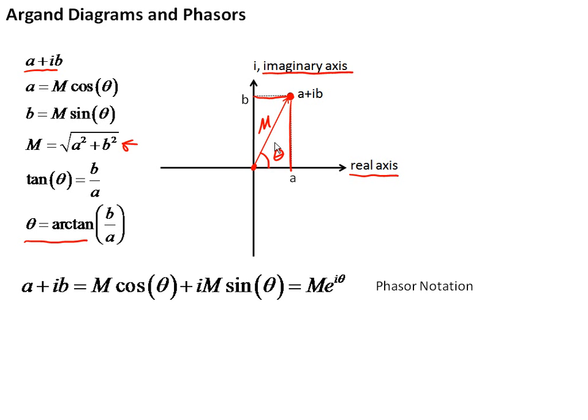This is called phasor notation. When you represent a complex number this way, you might think that's a pain, now I've got to remember trigonometry besides complex numbers. Why should I learn this? Well, it turns out that phasor notation is really useful. If we have a complex number a plus ib, we can represent it through Euler's equation as a magnitude times a phase term. There's the magnitude M, and e to the i theta is the phase.